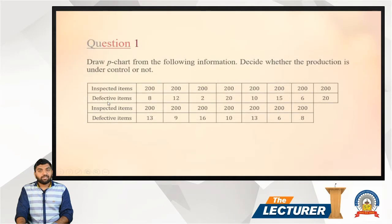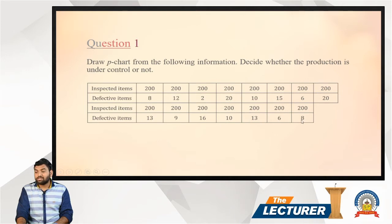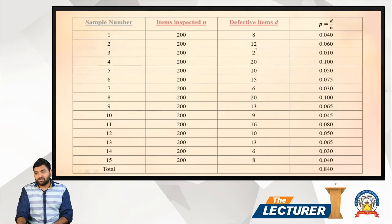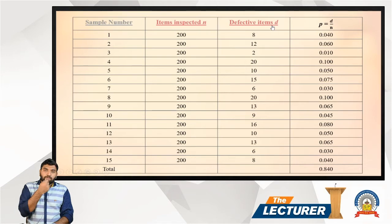Next we fill in the defective items column. The defective items are: 8, 12, 2, 20, 10, 15, 6, 20, 13, 9, 16, 10, 13, 6, and 8. We denote the defective item count as d.